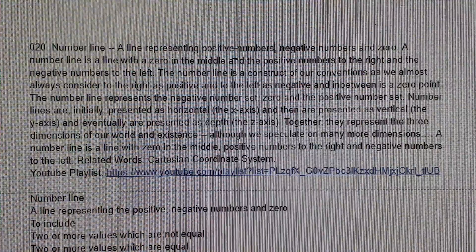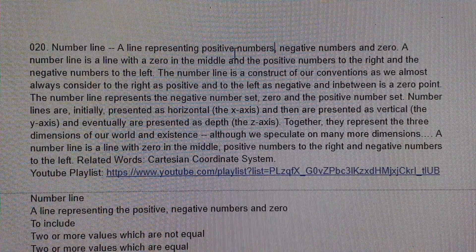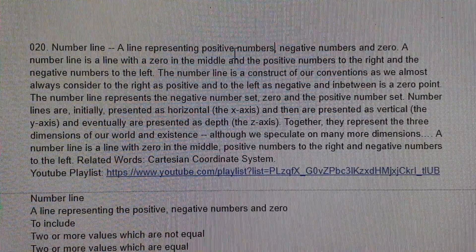A number line is a line with zero in the middle, positive numbers to the right, and negative numbers to the left. Related words: Cartesian coordinate system.